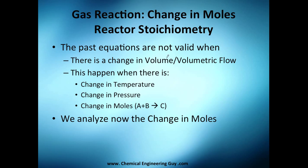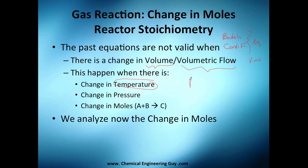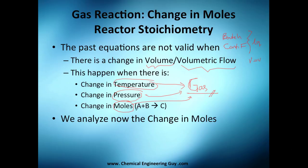The equations we've seen so far cover batch and continuous flow reactors with constant volumes. But what happens when we don't have constant volumes — when there is a change in volume or volumetric flow? This happens when you are in a gas phase. When there is a change in temperature, pressure, or number of moles, you affect the gas.